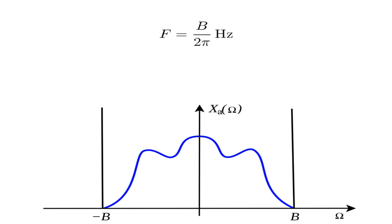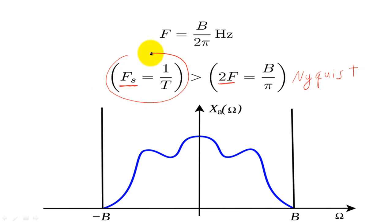When we have a signal that is band-limited to B radians per second, or F hertz, we can perfectly recreate the original analog signal if the sampling frequency is high enough. Specifically, we can recreate the analog signal if the sampling frequency, F sub S, is greater than 2F. The critical sampling frequency where F sub S equals 2F is called the Nyquist frequency. Notice that F sub S is inversely related to T. So small intervals of time for T will equate to higher sampling frequencies.